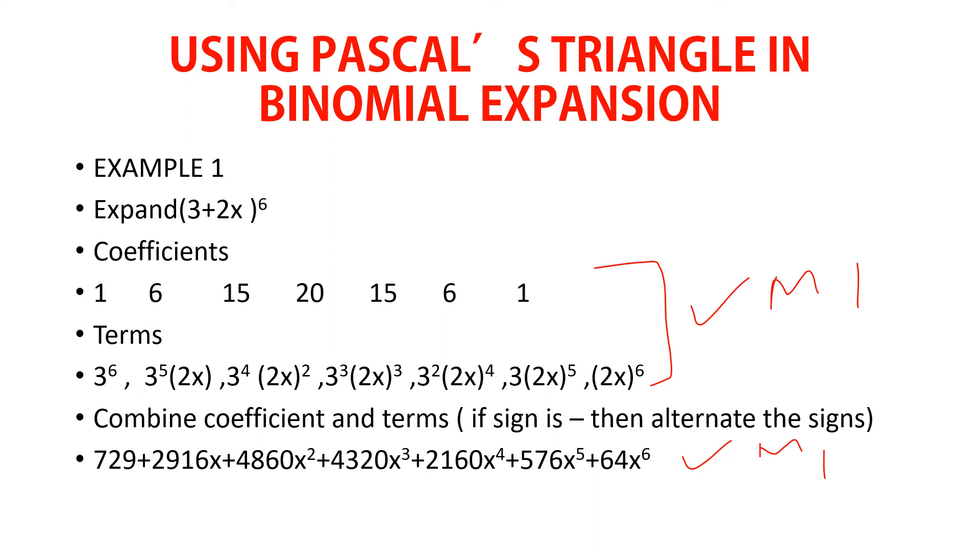Then from there, you combine the coefficient and the terms by multiplying. So to get 729, it is 3 raised to power 6, the term, multiplied by 1, the coefficient. To get 2916, it is 3 raised to power 5 multiplied by 2 multiplied by 6. To get 4860, it is 3 raised to power 4 multiplied by 2 squared, which is 4, multiplied by 15. So you are taking the term, you expand the term using the powers that are there, then multiply by the coefficient so that you get the whole of that statement. That part will earn you two marks. There's a method mark for getting the coefficient and terms combined, and then another method mark for combining to get the full expansion up to where the examiner wants you.